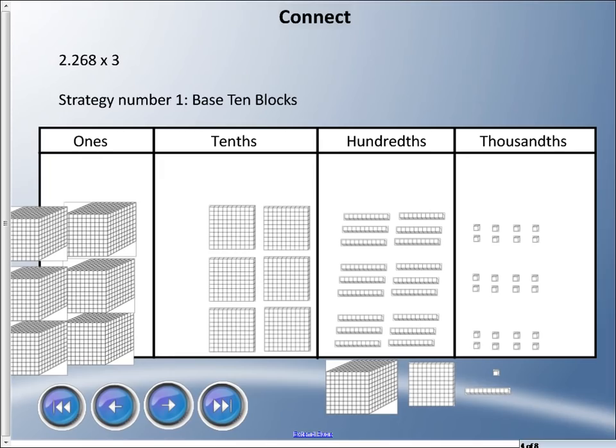I have three rows here for 2.268. You can see in the ones column I have two thousand cubes, and why do I have that represent a one? Well, we're going to work to thousandths, and one thousand thousandths equals one. So we're going to shift our thinking. You can see there's two tenths or two hundred blocks in each row, and I have six hundredths and I have eight thousandths. I have three of them because that is how much is all together.